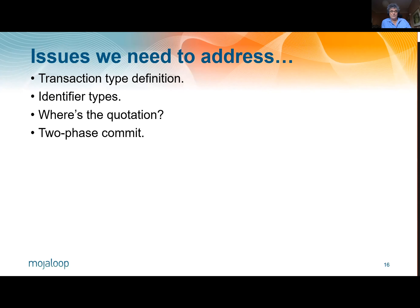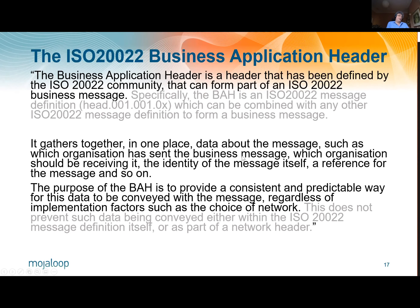But first, I want to talk about an interesting little get-out-of-jail-free card which ISO provides, and that is the business application header. The ISO community defined this and essentially said it's something that could be attached to any business message. It gathers in one place a relatively small amount of data about the message. So one of our quick and easy ways of winning, we think, is to use the business application header.